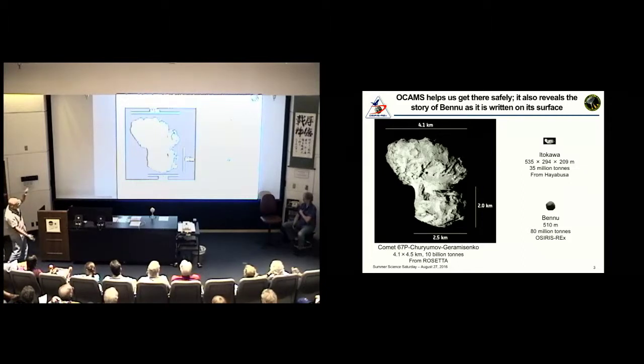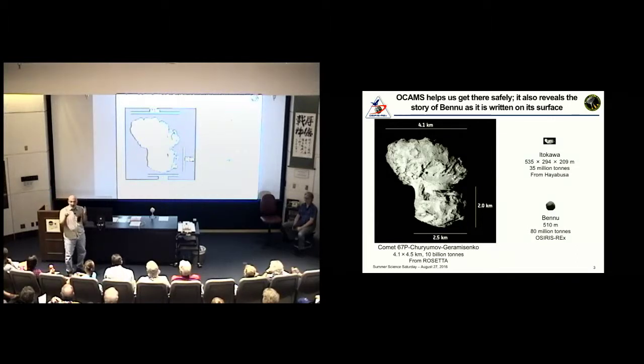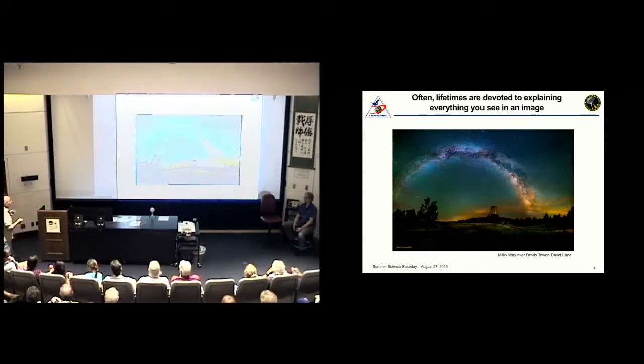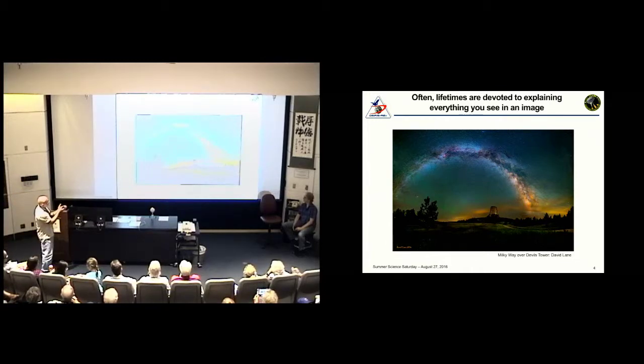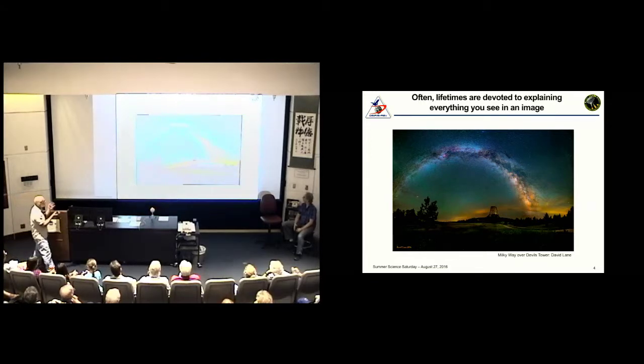The second reason we have the cameras on board is to try to do science. The science we want to do is to examine the history of Bennu and see what the surface reveals to us about where this object has been. In many ways, the history of Bennu, a primitive object like Bennu, is the history of the solar system itself. So I'm going to present to you a number of images of different phenomena to try to understand and motivate what we're trying to gather from these pictures.